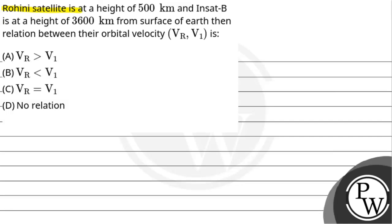Rohini satellite is at height of 500 km and Insat B is at height of 3600 km from the surface of Earth. Then the relation between their orbital velocities VR and VI is.